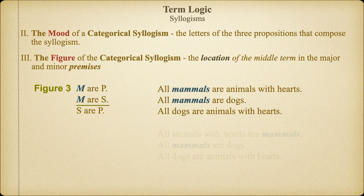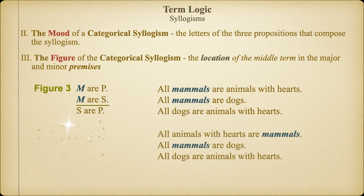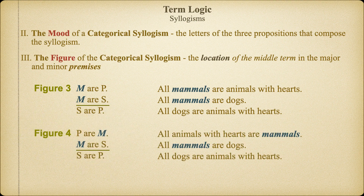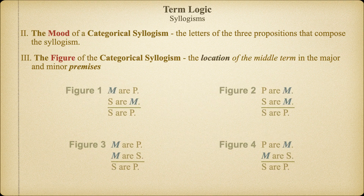Similarly, we would label a categorical syllogism as being in Figure 3 if the middle term is in the subject position of both premises. And to round it out, we would label a categorical syllogism as Figure 4 if the middle term is in the predicate position of the major premise and the subject position of the minor premise. So there are four possible figures for categorical syllogisms.